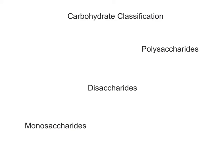There are three major groups of carbohydrates. In order of increasing size, these are the monosaccharides, disaccharides, and the largest carbohydrates, the polysaccharides.